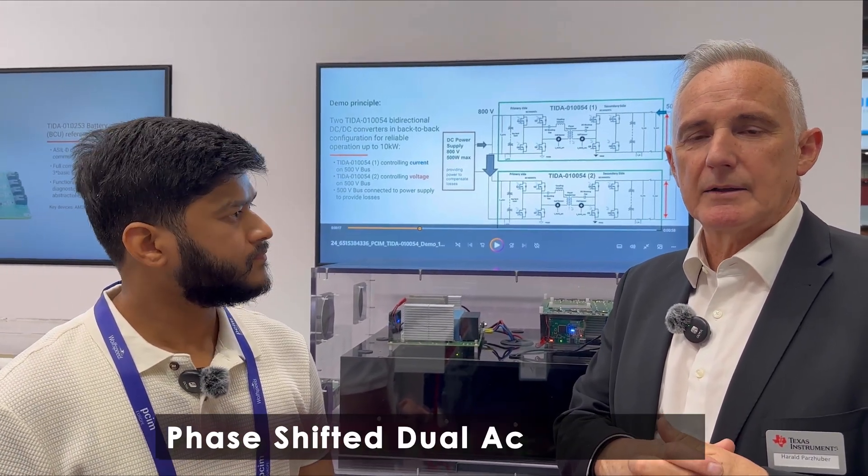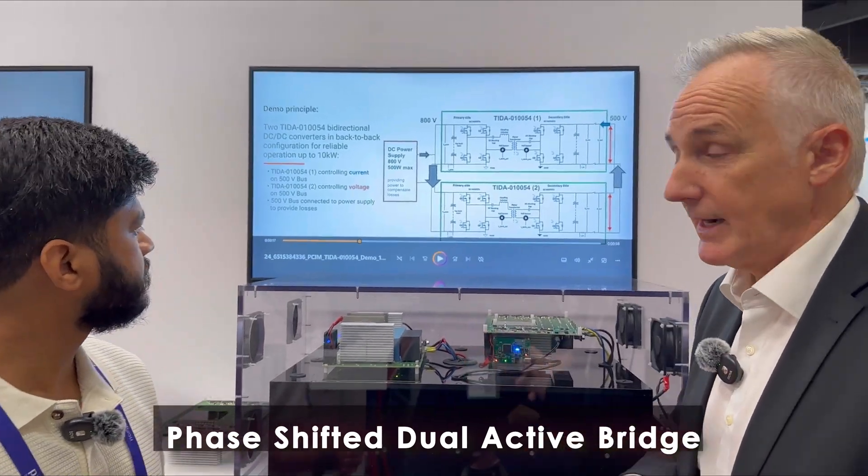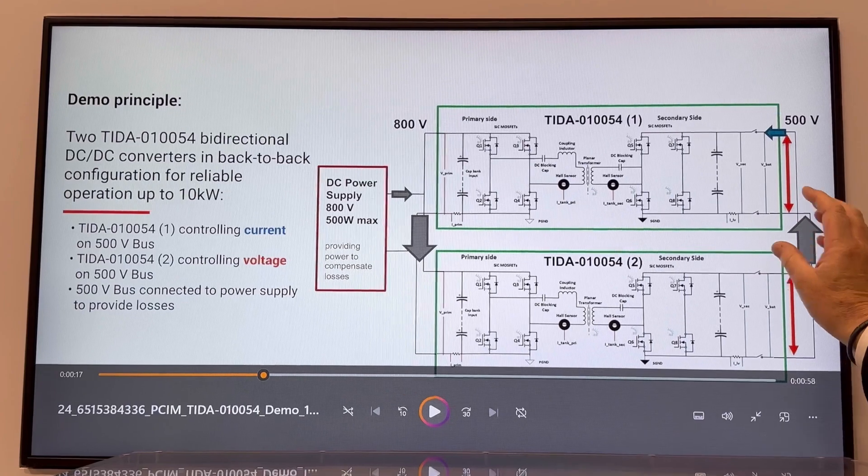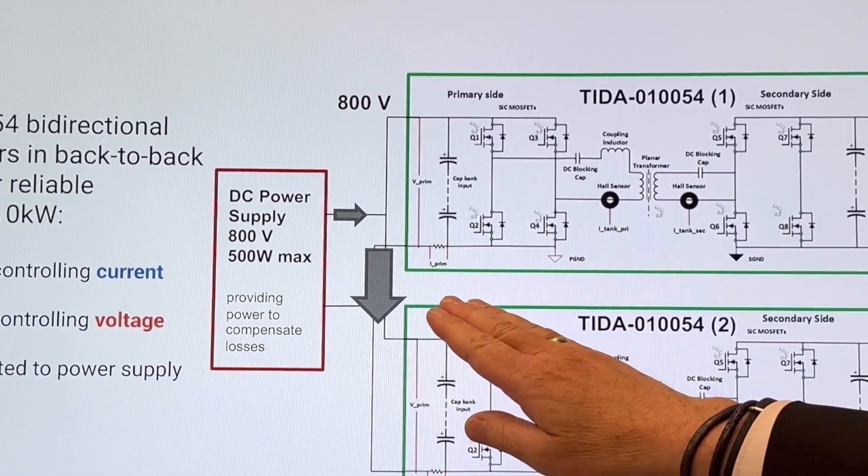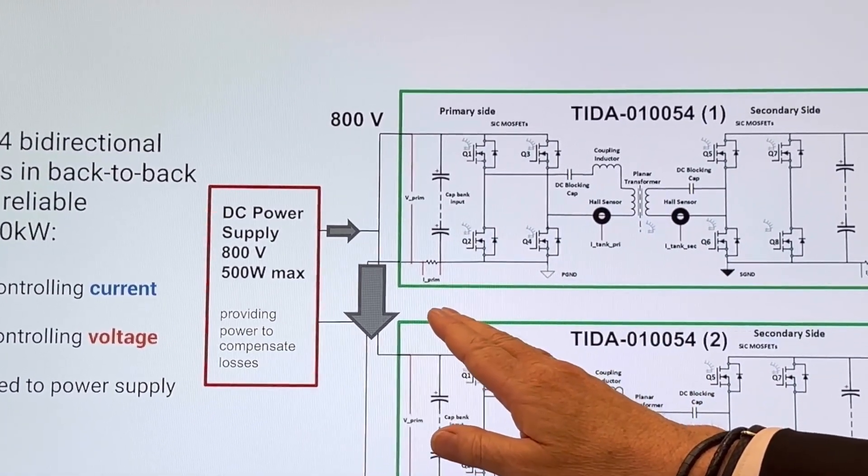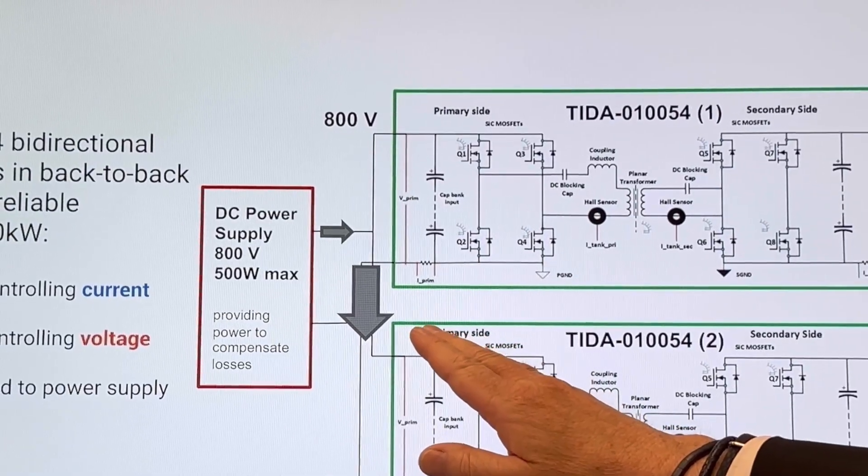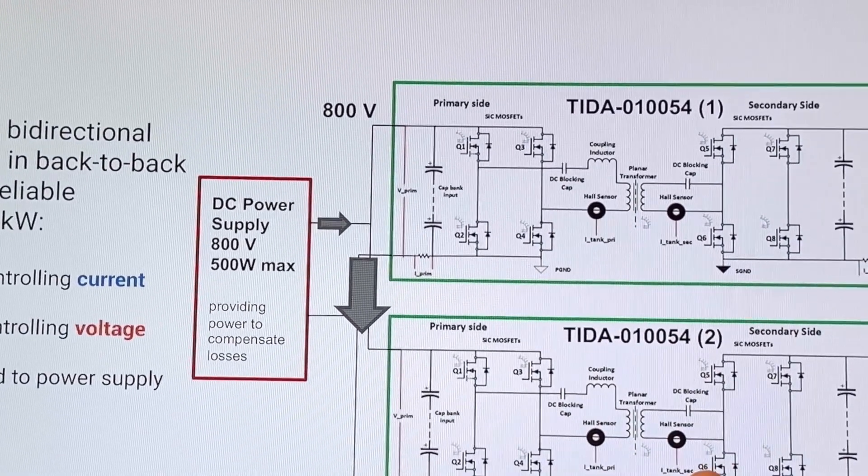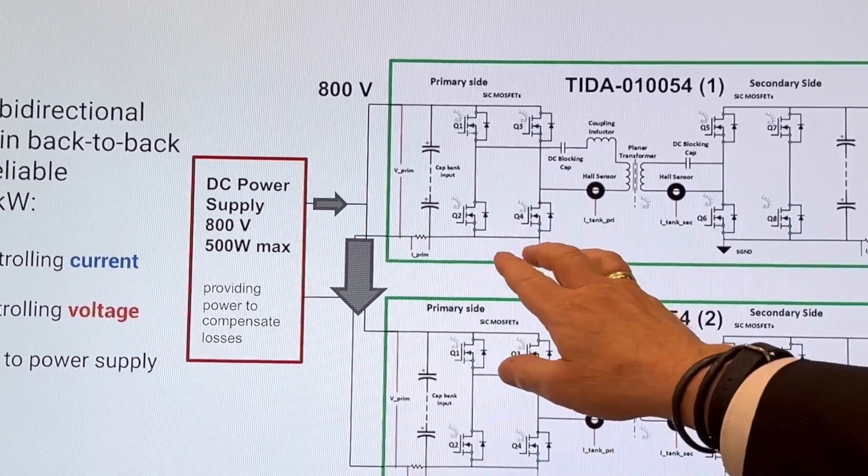And here we have basically used an approach which is a so-called phase-shifted dual active bridge. Let me explain that a little bit to you. You see the block diagram here on the top. It has an input side with 800 volt DC, which is coming from the three-phase converter AC to DC.